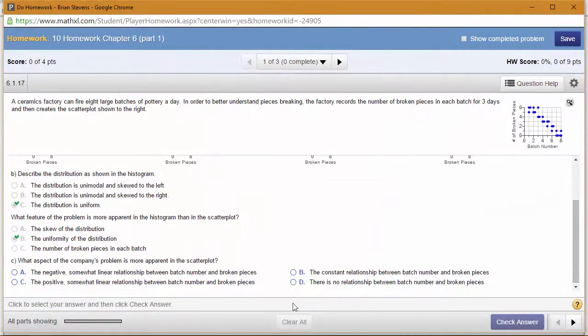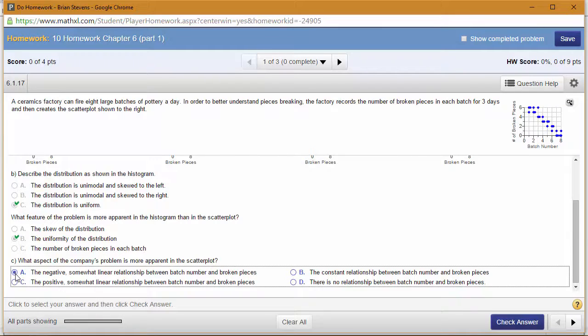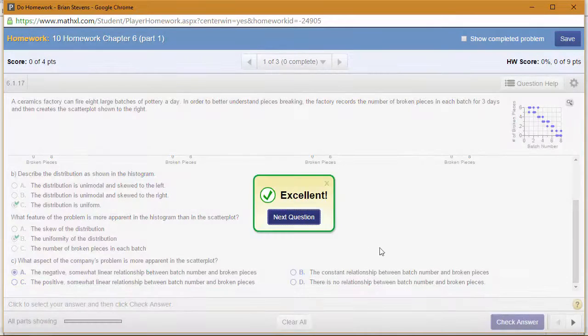It's negative and more than somewhat linear—this is very linear. This is definitely a negative correlation between broken pieces and batch number. As we said, as batch number increases, broken pieces decreases. So in the later batches, we're doing a lot better.